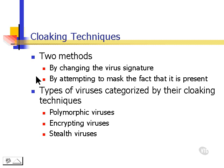Types of viruses categorized by their cloaking techniques are: polymorphic viruses, that are constantly changing their signature, appearing to be something else; encrypting viruses, which attempt to hide behind other files so they won't be seen; and stealth viruses, which attempt to make themselves invisible so that they won't be seen.